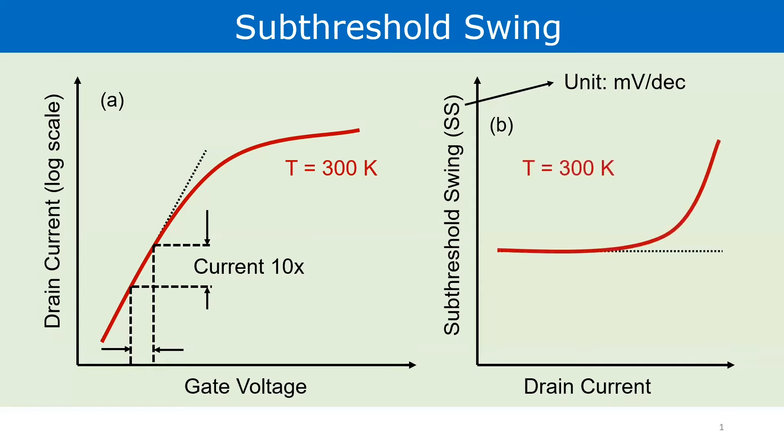In figure B, I've also plotted the corresponding subthreshold swing of the IV characteristics of figure A. It can be verified that for lower gate voltages in weak inversion, we get some constant value as long as the IV follows an exponential relation and later the subthreshold swing increases.